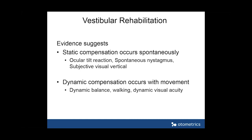Dynamic compensation requires movement. We need people to do the very activities they often avoid because they know they look like they have imbalance or feel dizzy. Examples include gait and balance exercises, a walking program, head rotation exercises, and dynamic visual acuity tasks. Dynamic visual acuity is a functional measure of gaze stability — research has shown we can improve dynamic visual acuity with these exercises.